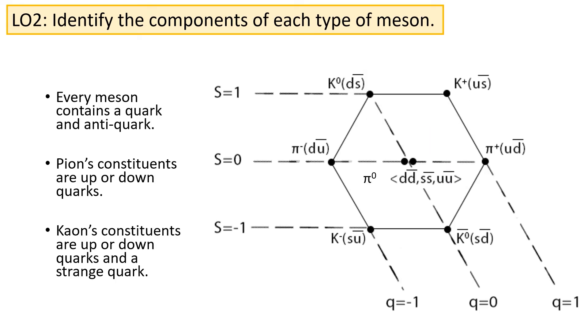There are, in fact, eight different mesons we need to know about, all containing some combination of quark and anti-quark. Pions always have constituents of up or down, and kaons always have an up or a down, and they always contain either a strange quark or an anti-strange quark.